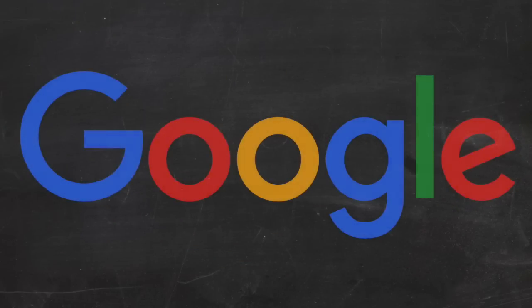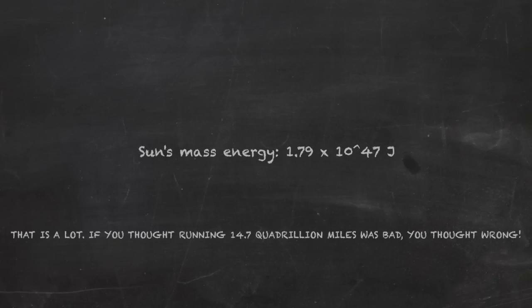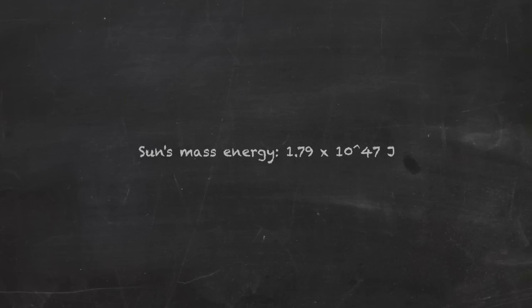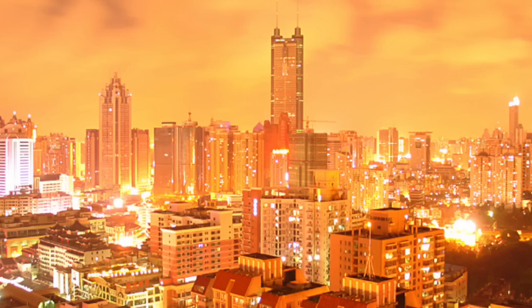A simple Google search will find our Sun's mass, and the Sun has a mass with a lot of zeros, resulting in the answer being 1.79 times 10 to the 47th joules of energy. Now these are big numbers.